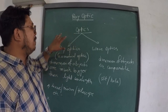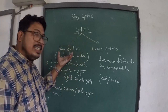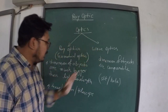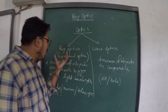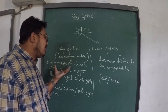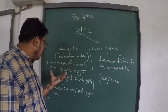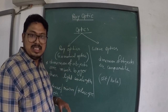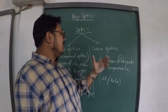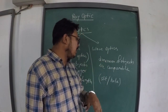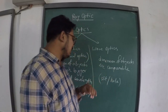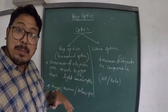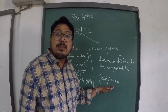Our optics is mainly divided into two parts: ray optics and wave optics. In ray optics, we are going to study the dimensions of objects which are much bigger than the wavelength of light. In wave optics, we study the dimensions of objects which are comparable to light. In ray optics, we study devices like lens, mirror, plane mirror, and telescope.